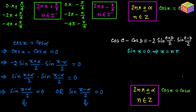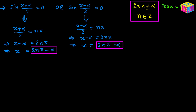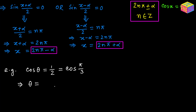Let's take another example. Suppose we have cosine of theta equals one half and we have to find the general solution for theta. We can write one half as cosine of 60 degrees, which is cosine of pi over 3. Using the formula, theta equals 2n times pi plus or minus pi over 3, where n is an integer.